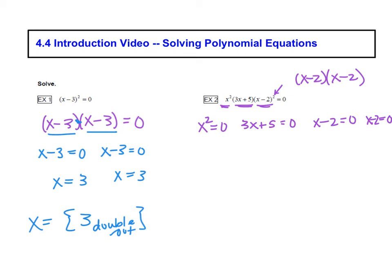So on this X squared equals zero, X squared is X times X equals zero. That means that the X equals zero or the other X equals zero. So we have two of them, X equals zero and X equals zero. On this next one, we're going to solve for X. We're going to subtract 5. So we have 3X equals negative 5. Then we divide both sides by 3. So we have X equals a negative 5 thirds.